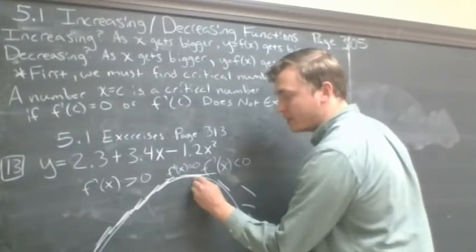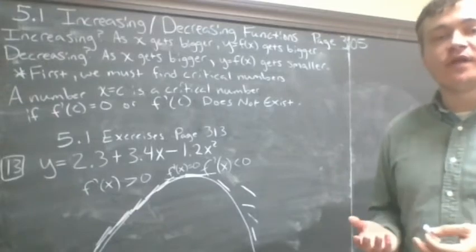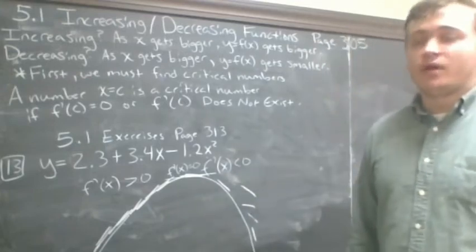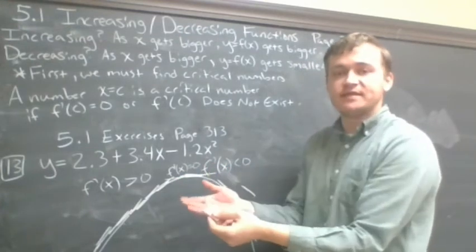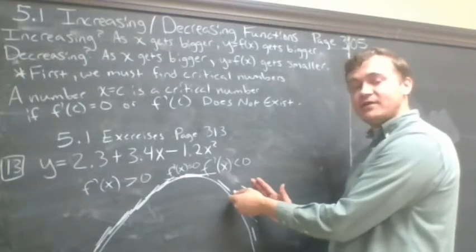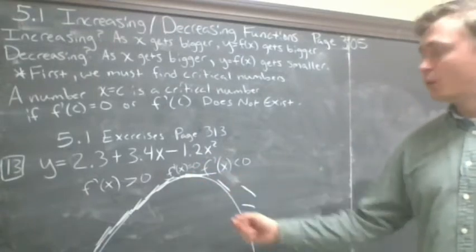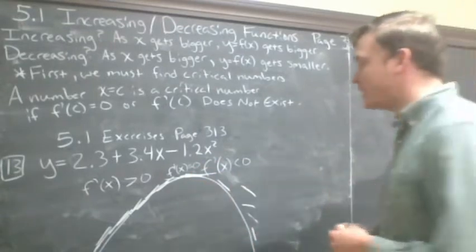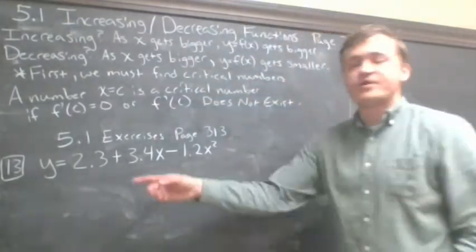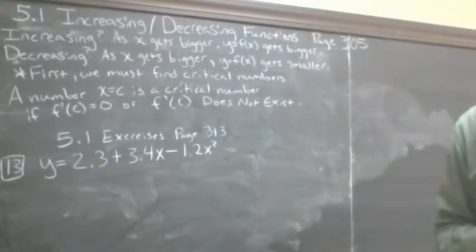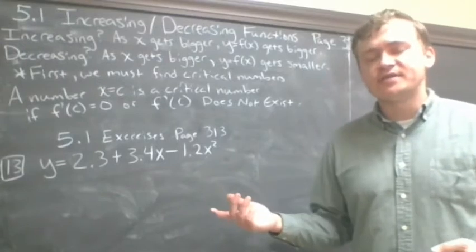If we have a bump on the graph — that highest point — we would call that a relative maximum. As we go from positive slopes to zero and then negative instantaneous rates of change, that critical number where the turnover occurs is a relative maximum. For problem 13 in the 5.1 exercises, we're being told to find the critical numbers and interpret where this function increases and decreases — what intervals are increasing and decreasing.